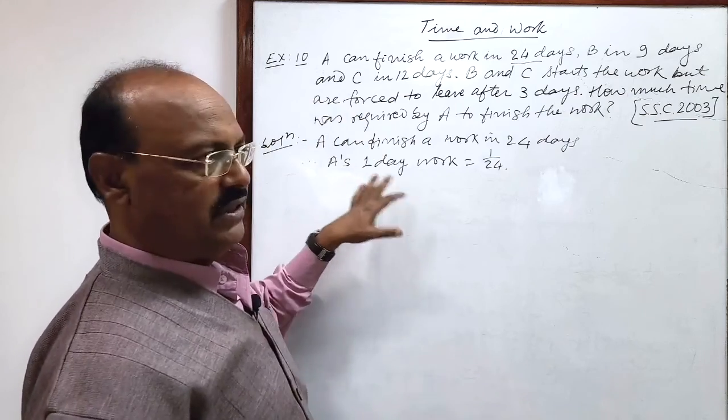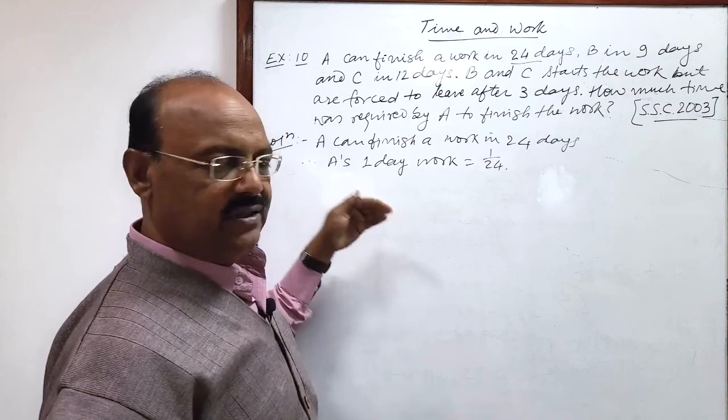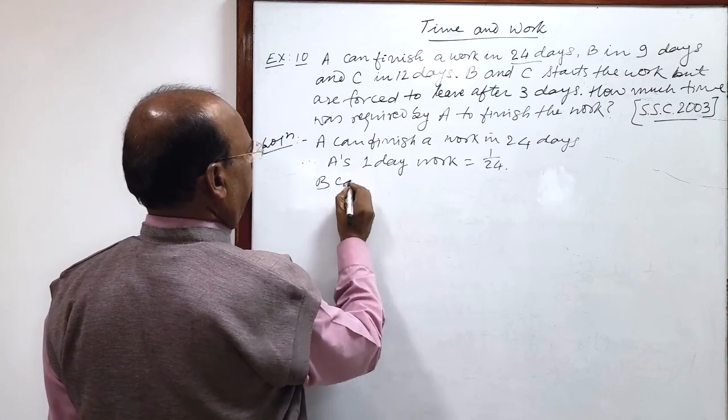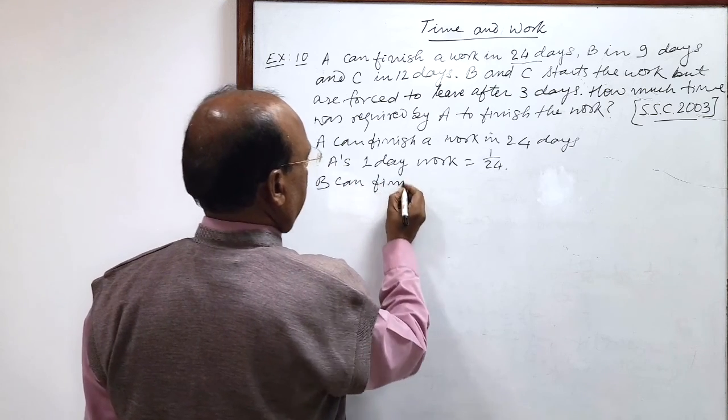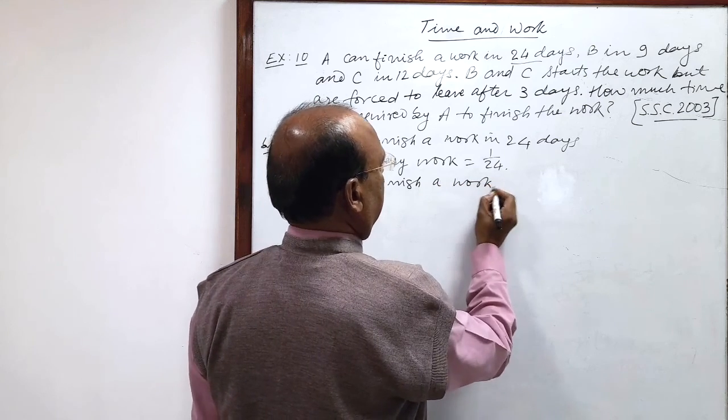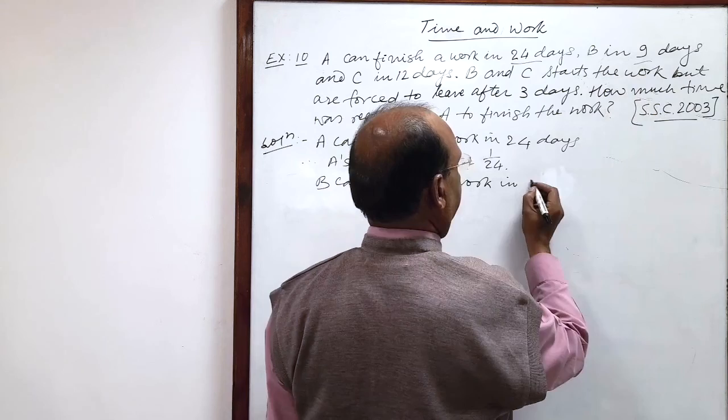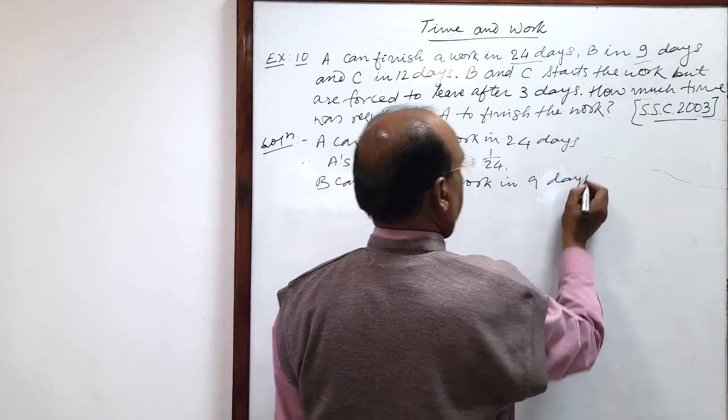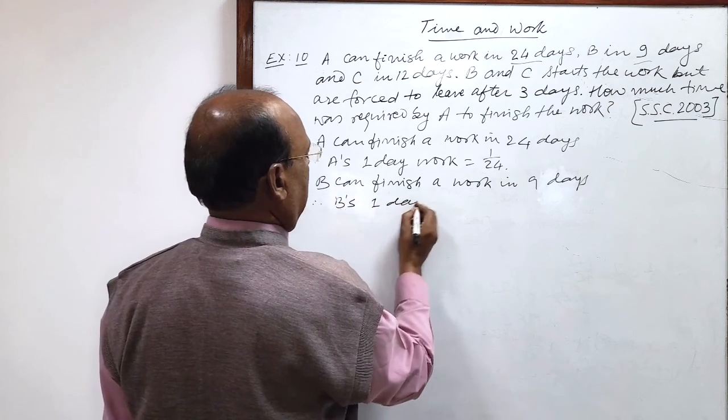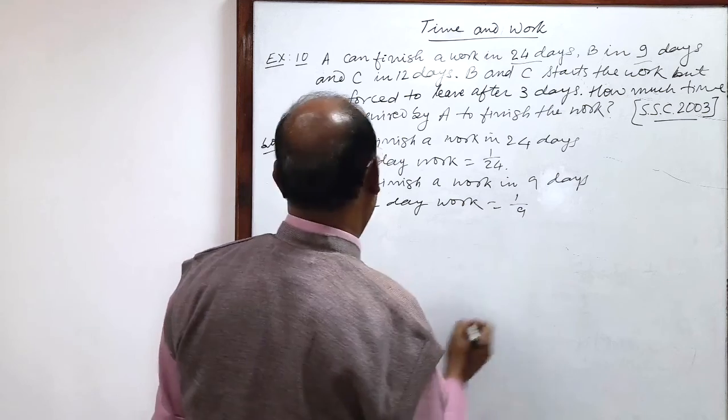Similarly, we will find first of all 1 day work of B's and C's also. B can finish a work in 9 days. Therefore, B's 1 day work is 1 by 9.